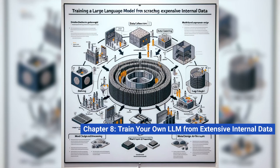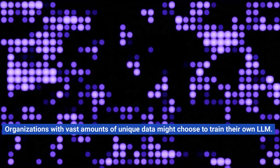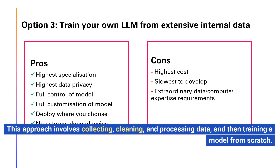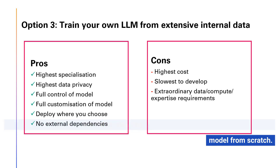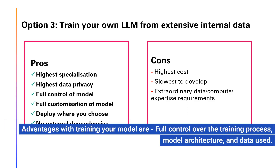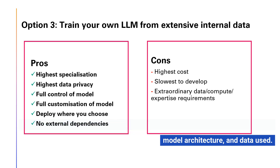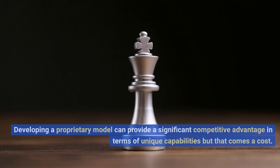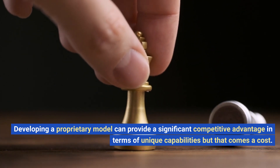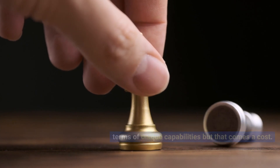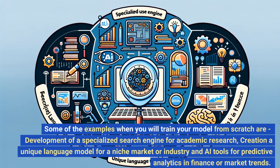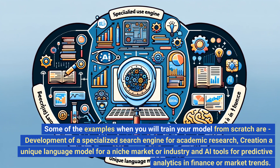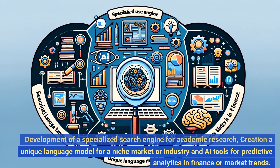Chapter 8: Train Your Own LLM from Extensive Internal Data. Organizations with vast amounts of unique data might choose to train their own LLM from scratch — collecting, cleaning, and processing data before training. Advantages include full control over the training process, model architecture, and data used, with the model precisely aligned to the specific needs and nuances of the business. Developing a proprietary model can provide significant competitive advantage, though it comes at a cost. Examples include development of a specialized search engine for academic research, creating a unique language model for a niche market, and AI tools for predictive analytics in finance or market trends.